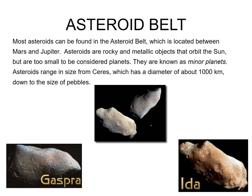The asteroid belt — most asteroids lost their glimmer and their bright features. Most asteroids are found in the asteroid belt, located between Mars and Jupiter. Asteroids are rocky and metallic objects that orbit the Sun but are too small to be considered planets. They are known as minor planets.